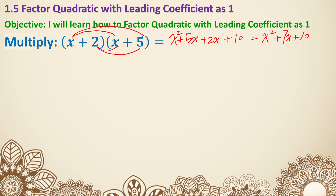Now we're going to think backwards. What if I didn't give you all of that — all I gave you is the result — and I'm asking you how can you put them inside parentheses to figure out it's going to be x plus 5 and x plus 2. You may notice that 5 times 2 is 10, and 5 plus 2 is 7. It seems like we just need two numbers that can multiply together to get 10 and then add up to 7.